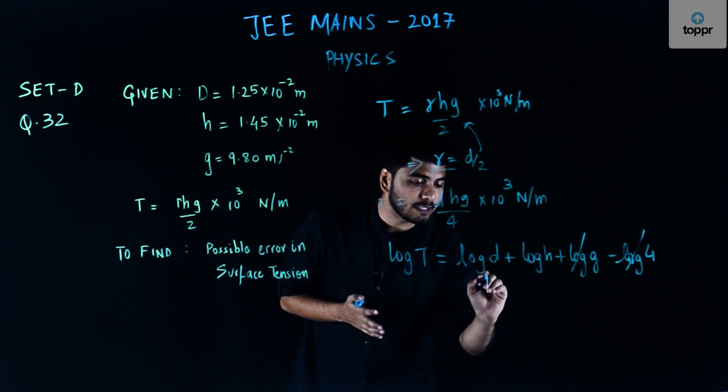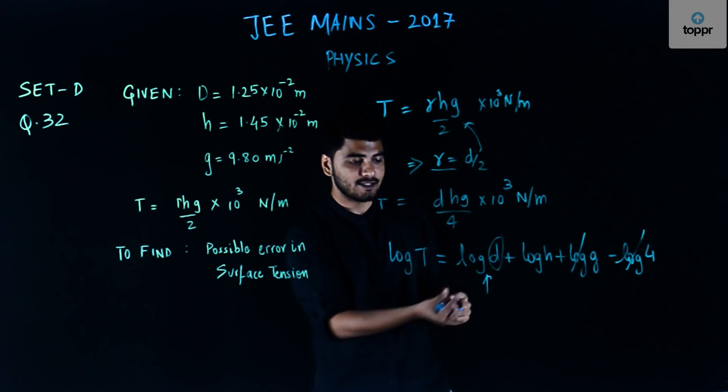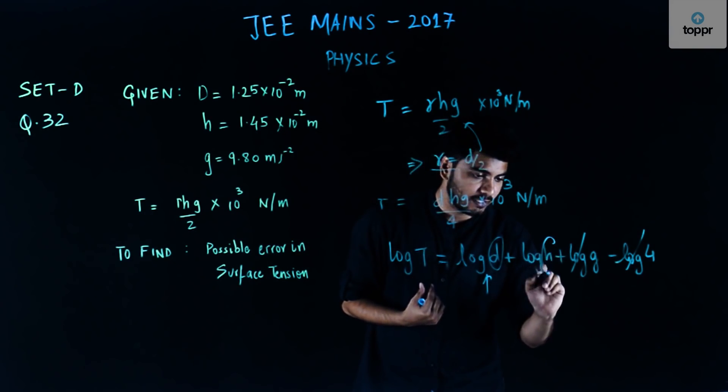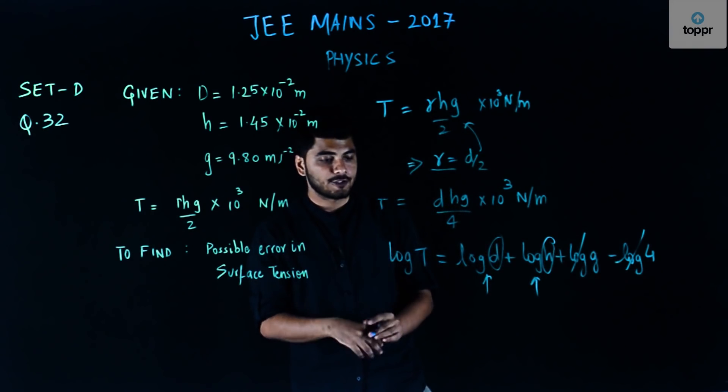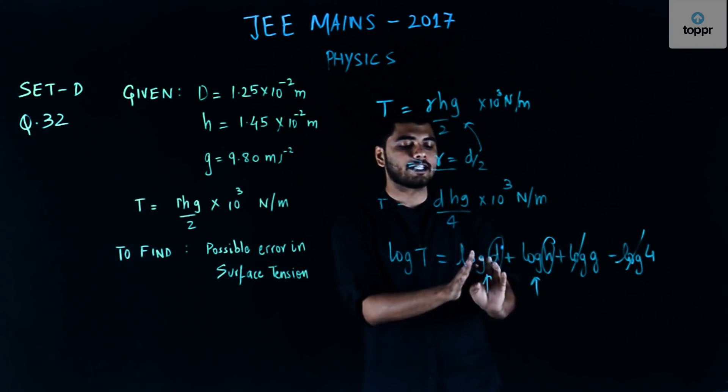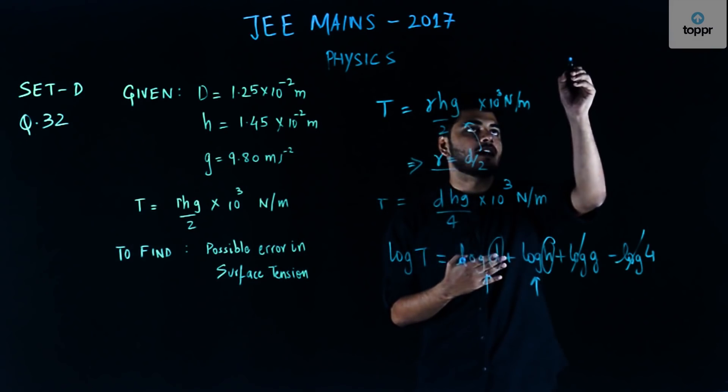The error can only be in log D because my D is something which we are measuring with the help of an instrument and hence it can have error. Similarly H is something which is measured using an instrument and it can have error.